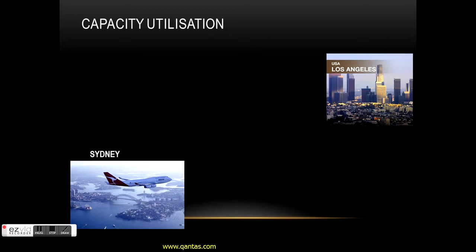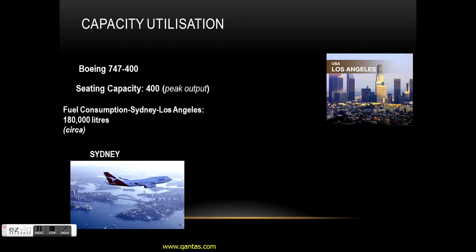Let's look at an example in the air industry. We have a Boeing 747 with a capacity of 400 people taking off from Sydney flying to LA. The fuel needed for that non-stop flight is approximately 180,000 litres - it depends on atmospherics, headwinds, or storms. At the current price of 88 cents per litre, that gives us a total fuel cost of approximately $158,400 to fill up the tanks.